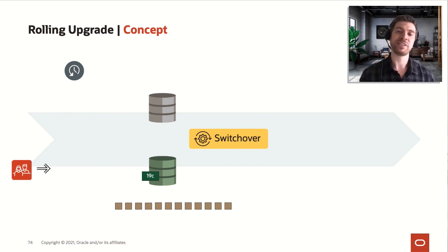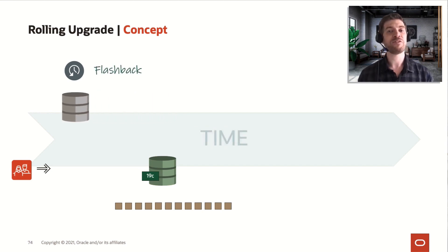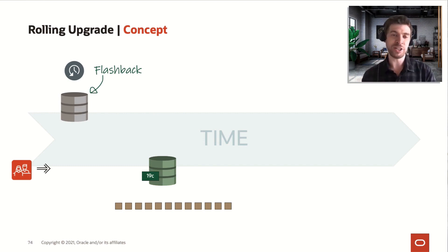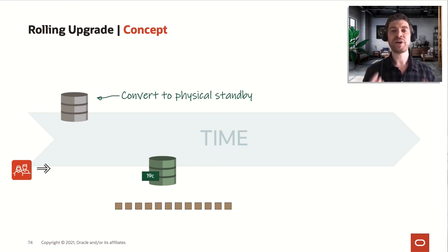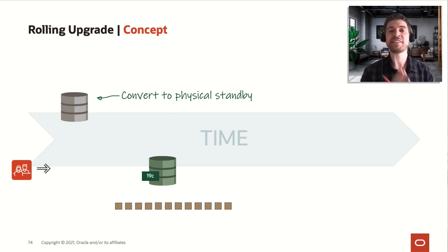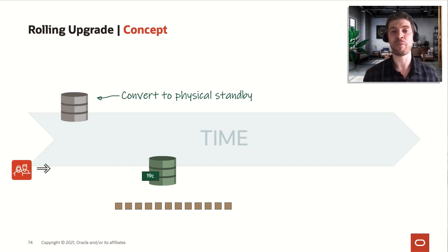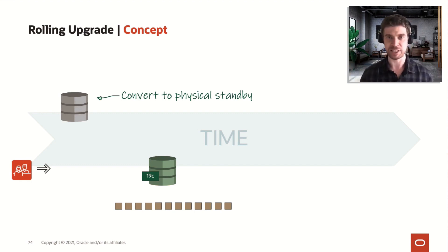Now that our customers are connecting on the 19c database, we flashback our former primary database back to the GRP that we created. We go back to that GRP and convert it to a physical standby. Now that it's converted to a physical standby, we need to apply all the redo log files generated by the logical standby database — now our primary — since it was opened in read-write mode. All those redo log files, shown as brown squares at the bottom, need to be shipped and applied on what is now our physical standby database.